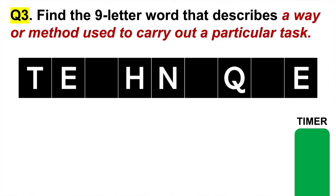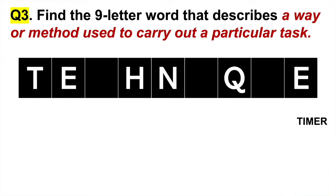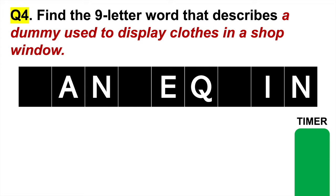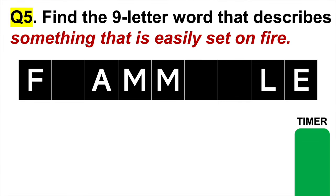Question three: find the nine-letter word that describes a way or method used to carry out a particular task. If you are able to answer these in the time limit, you are doing exceptionally well. Question four: find the nine-letter word that describes a dummy used to display clothes in a shop window. And question five: find the nine-letter word that describes something that is easily set on fire.